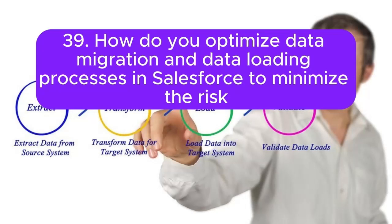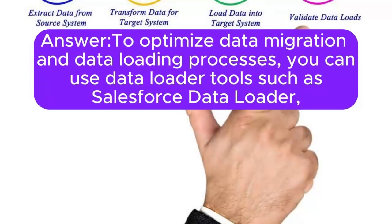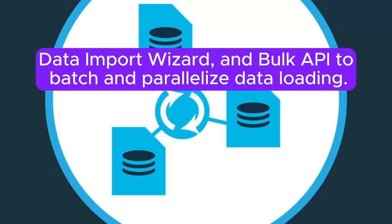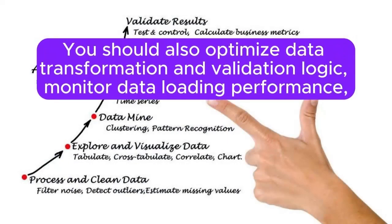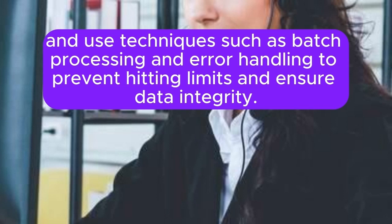Question 39: How do you optimize data migration and data loading processes in Salesforce to minimize the risk of hitting governor limits related to data import and export operations? Answer: To optimize data migration and data loading processes, you can use data loader tools such as Salesforce Data Loader, Data Import Wizard, and Bulk API to batch and parallelize data loading. You should also optimize data transformation and validation logic, monitor data loading performance, and use batch processing and error handling to prevent hitting limits and ensure data integrity.